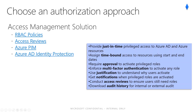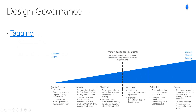Azure Identity Protection is a tool that allows organizations to accomplish three key tasks: to automate the detection and remediation of identity-based risks, investigate risks using the data in the portal, and export risk detection data to third-party utilities for further analysis.